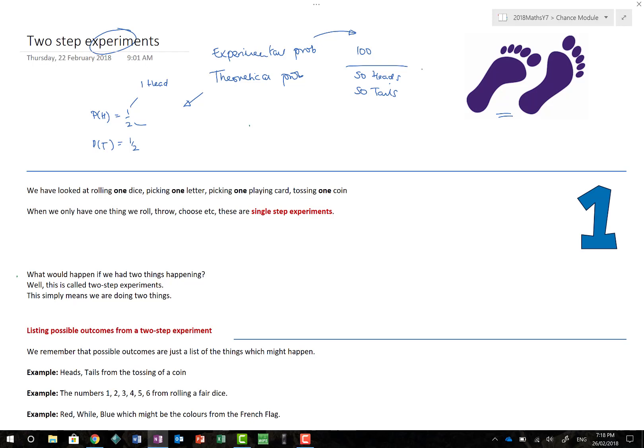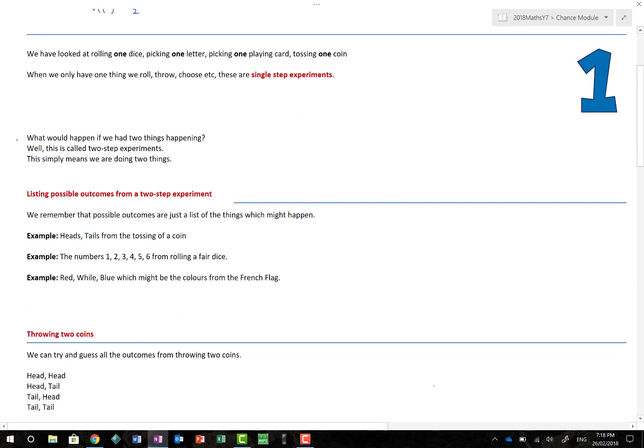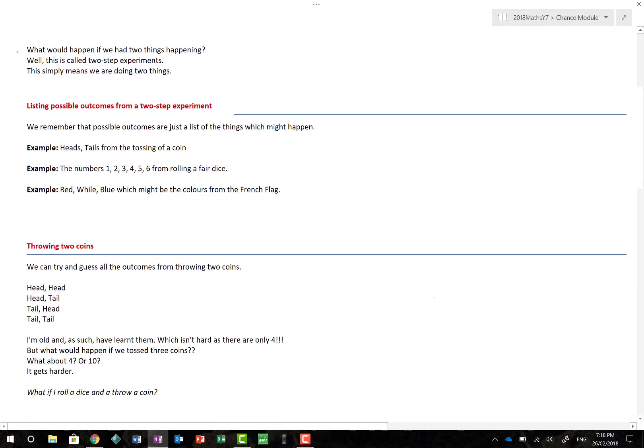So what is this two-step experiment? Well previously we've looked at rolling one dice, picking one letter, picking one playing card, or tossing one coin. And when we're doing things with only one roll, one throw, one choice, they're called single-step experiments. But what about if we do two things? Like what if we were to toss two coins or roll two dice? Well they are called two-step experiments.